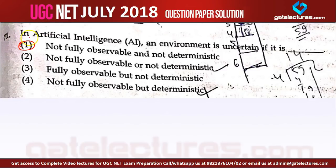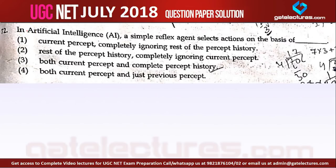Question number 71 is simply asking about the definition of uncertain environment. An uncertain environment is when an agent cannot fully observe the environment and it cannot determine the next step. When the next state is undetermined, that means non-deterministic. So when the environment is not fully observable and non-deterministic, we say the environment is uncertain.